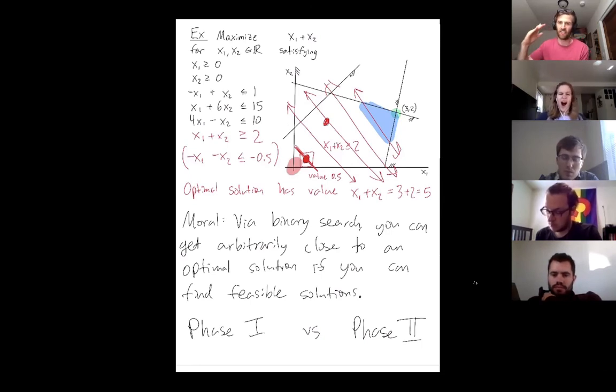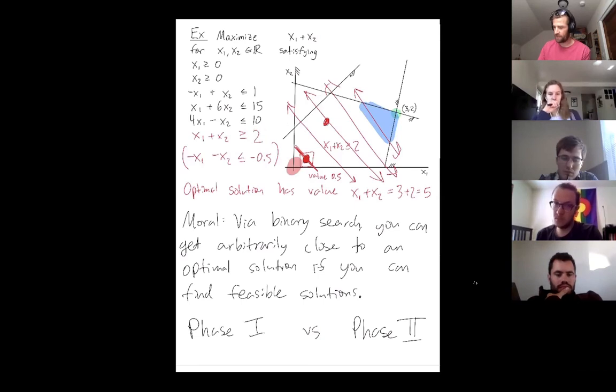As I outlined here, just adding constraints saying, okay, I found a pretty good solution, but now I'm adding a constraint saying I want an even better one. Good question, Jack. Other questions?